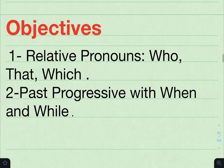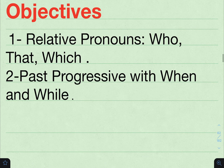Now let's take a look at the objectives. Number 1: relative pronouns — who, that, which. And number 2: past progressive with when and while.